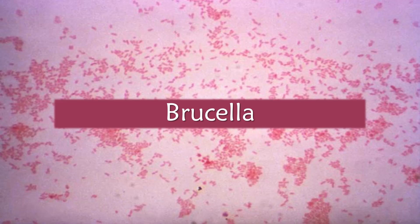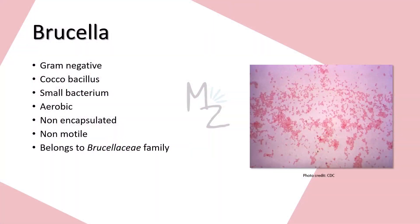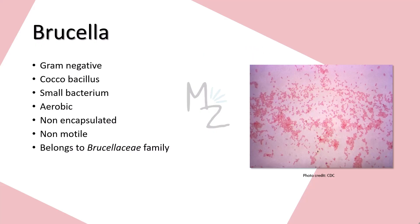So have a cup of tea and let's get started. Brucella is a gram-negative coccobacillus. Coccobacillus means this organism is in between the coccus (the spherical form) and the bacillus (the rod form) — it looks kind of egg-shaped. It's a small bacterium. It is aerobic, it is not encapsulated (meaning it has no capsule around it), and it is not motile because it has no motility apparatus. It belongs to the Brucellaceae family.